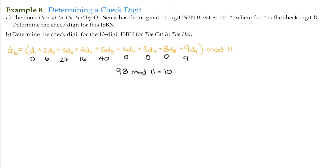The way to write this ISBN for part A is: 0-394-80001-X, where X is the Roman numeral for 10.